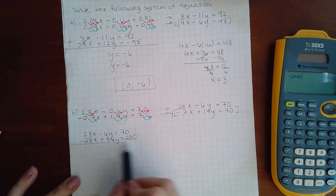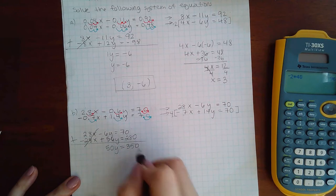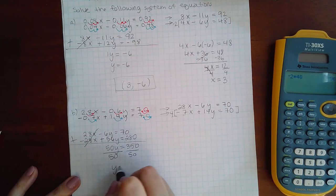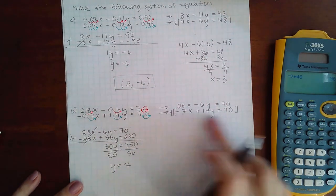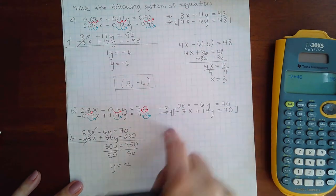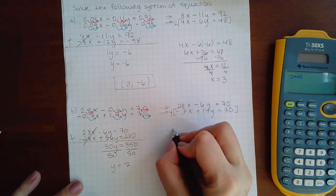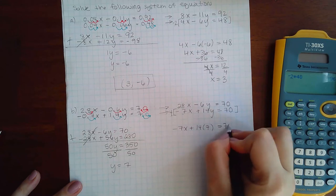Then I'm going to add these guys together. That's going to cancel. I'm going to end up with 50y equal to 350. Divide by 50 on both sides, you get y equals 7. And then you plug it back in. I always like to plug it back in the one in the bracket. If none of them had brackets and they were able to cross out right away then you just pick one. Negative 7x plus 14 times 7 equals 70.